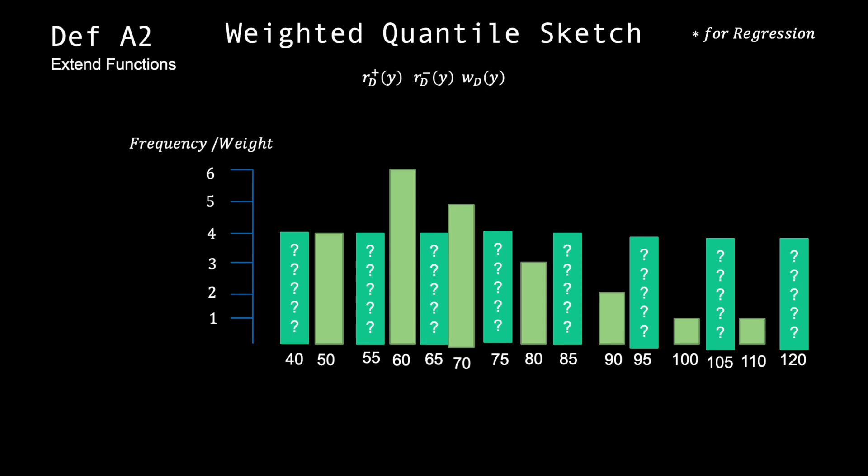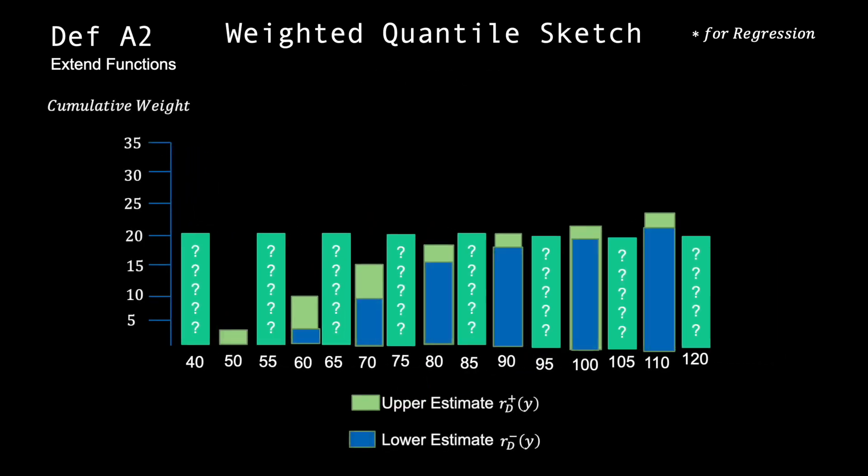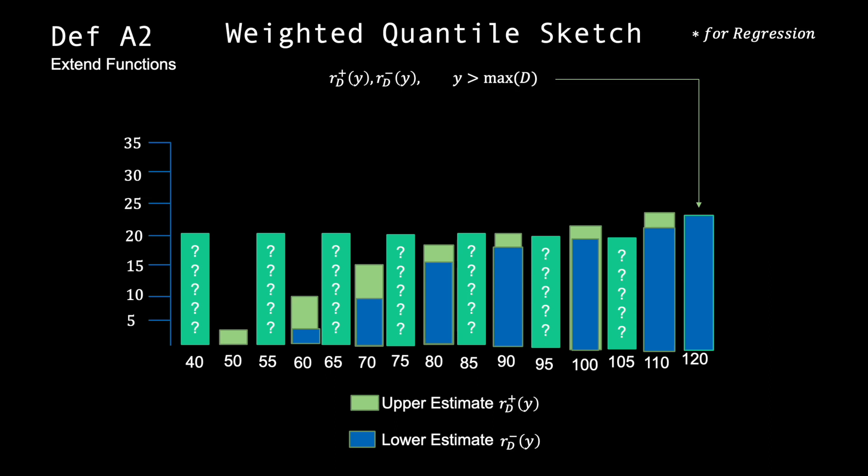That's where definition A2 comes in. A2 allows for data points that do not align exactly with data points in D to be ranked. If the data point is greater than the maximum in D, it is ranked the same as the maximum in D. If it is less than the minimum, it is ranked zero.